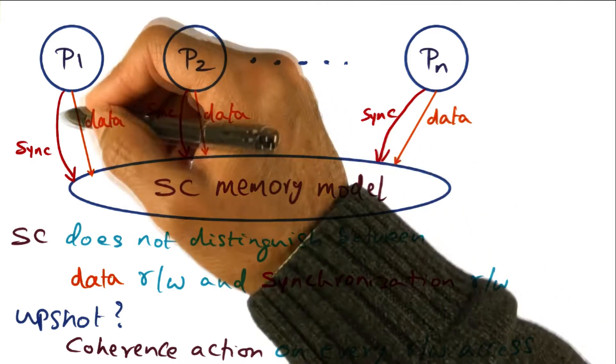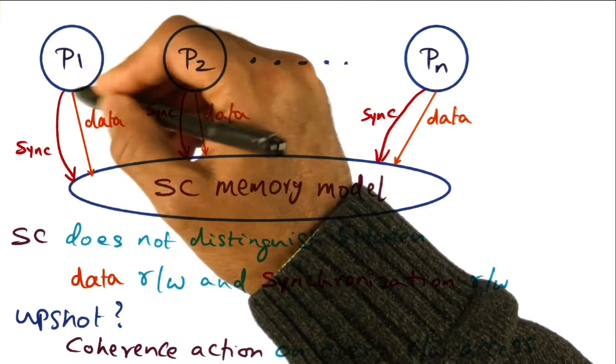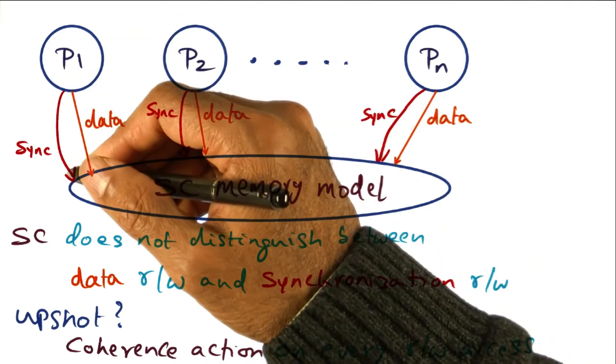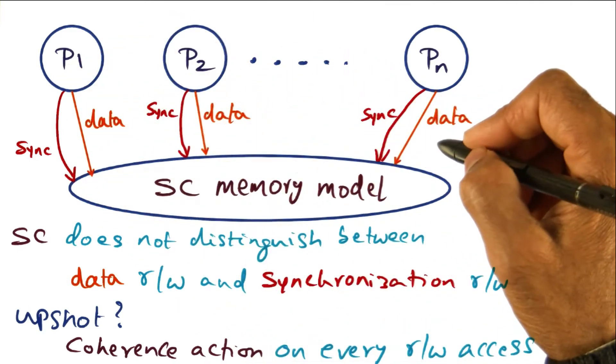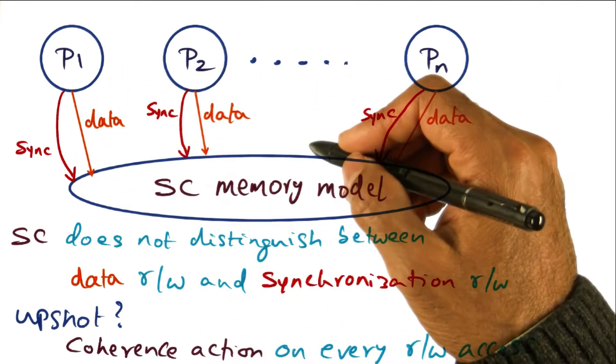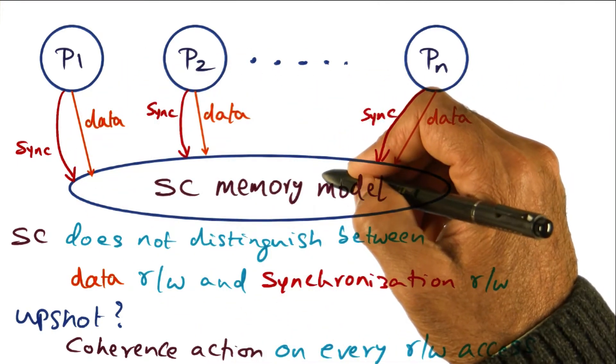It only looks at the read-write accesses coming from an individual processor and honors them in the order in which they appear, and makes sure that they can be merged across all these processes to preserve the SC guarantee.